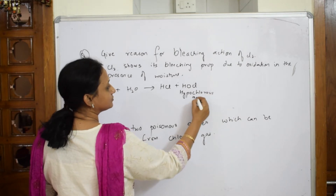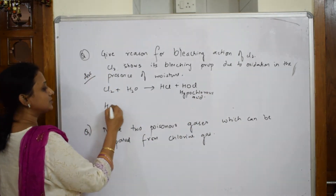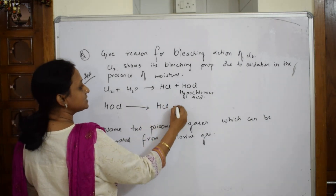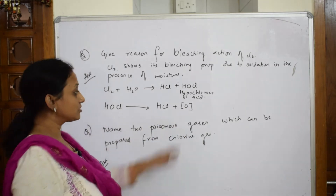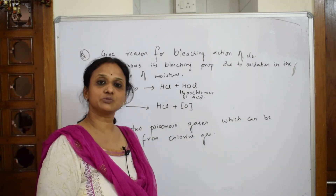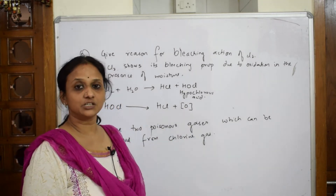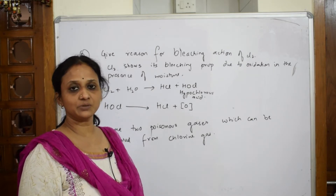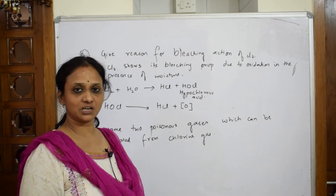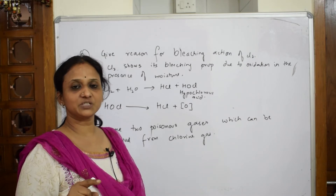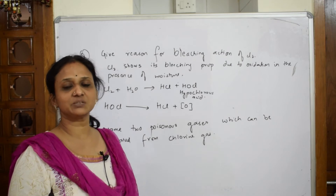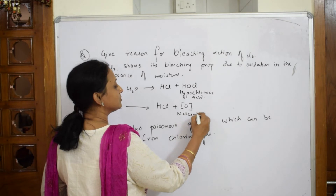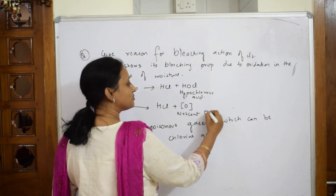This hypochlorous acid further dissociates into HCl and releases nascent oxygen. This nascent oxygen is responsible for chlorine's oxidizing property. It goes into the colored material, opens up the chromophores — the color segments in the cloth — and makes it colorless.